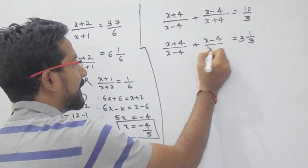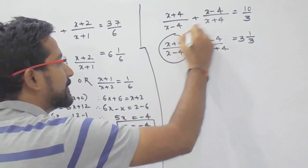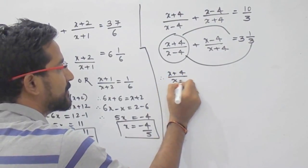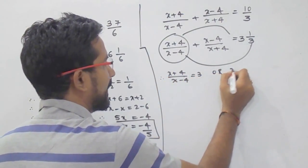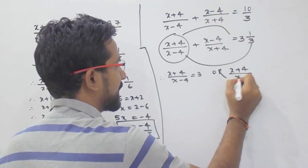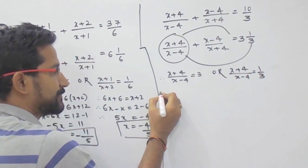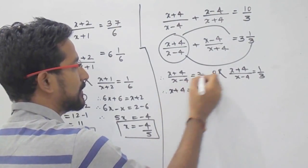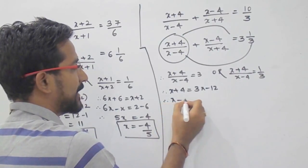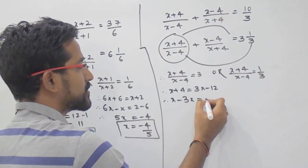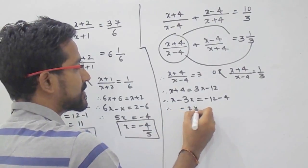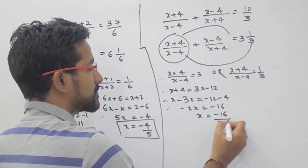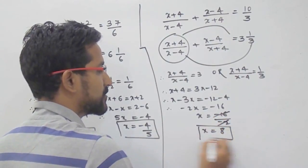Equate (x+4)/(x-4) with 3. Cross multiplication gives x+4 equals 3(x-4), so x+4 equals 3x minus 12. Then x minus 3x equals minus 12 minus 4, giving minus 2x equals minus 16, so x equals minus 16 divided by minus 2, which gives x equals 8.